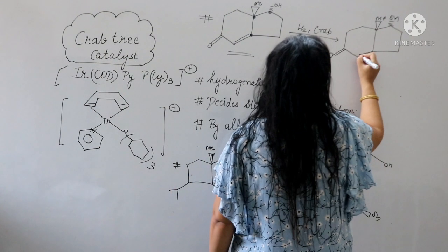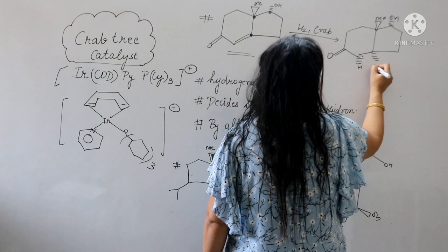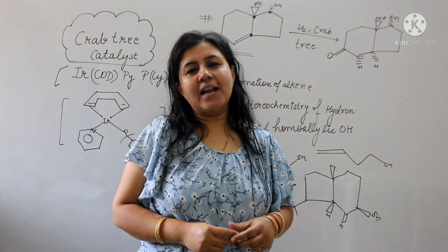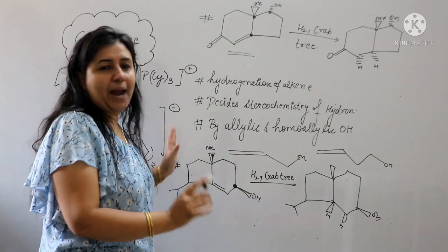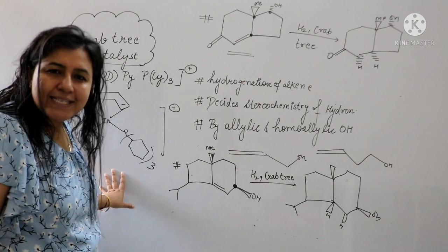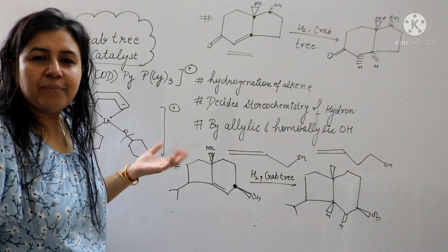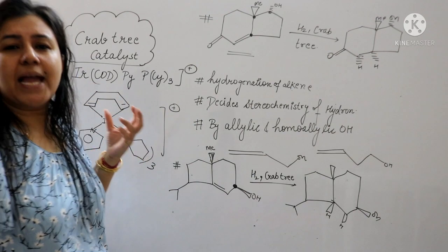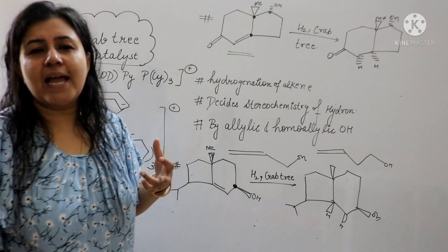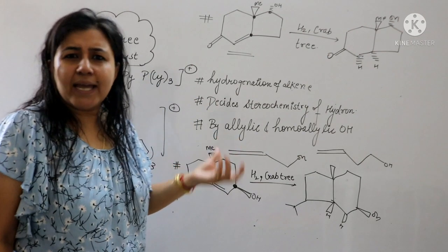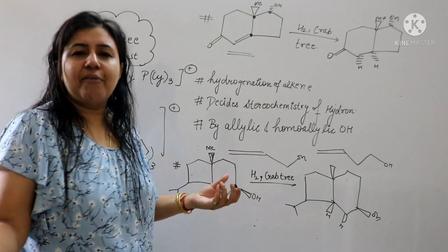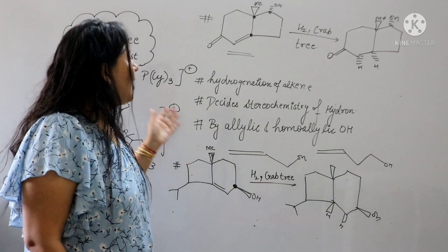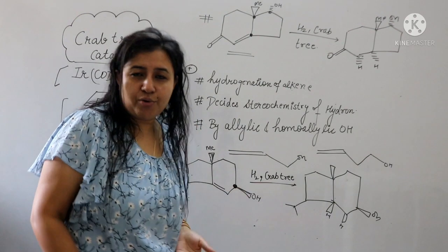So if OH is present, you just need to do hydrogenation. Draw the structure exactly as given, OH will remain on the same face, and hydrogen comes from the same side as OH. How simple it is. So this was the Crabtree catalyst. Just keep in mind: Iridium, cyclooctadiene, pyridine, and phosphorus cyclohexyl group. Remember it because it can come as a formula-based question. The three main functions are: hydrogenation, and deciding the stereochemistry.